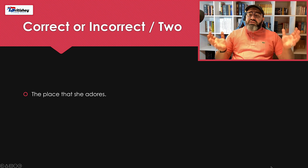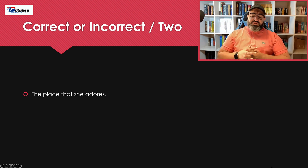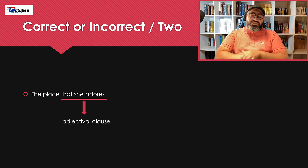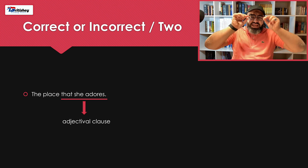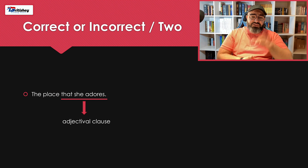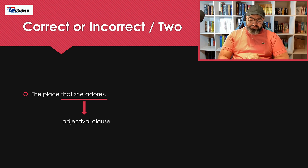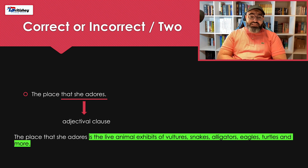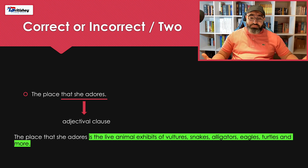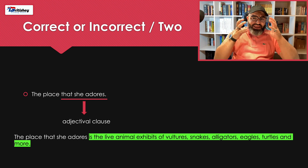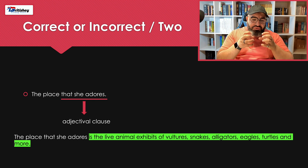Next example: 'The place that she adores.' The adjectival clause 'that she adores' is correct — 'that' is the connector, 'she' is the subject, 'adores' is the verb. But 'the place' is a subject without a verb — that's a problem. The correct version is: 'The place that she adores is the live animal exhibits of vultures, snakes, alligators, eagles, turtles and more.' Here 'is' is the main verb for 'the place.'